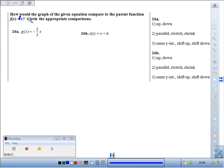For 26a, g(x) = -2/3x. That negative tells us that this line is going to go down because it's a negative slope.